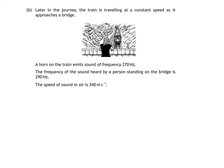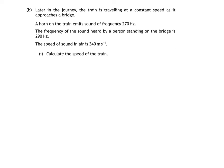Part 1 asks us to calculate the speed of the train. The equation of choice is the Doppler equation. F₀ is the observed frequency, 290 Hz. Fs is the frequency of the source, 270 Hz. V is the speed of sound, 340 m per second. And Vs is the speed of the source — this is what we're trying to find, the speed of the train.